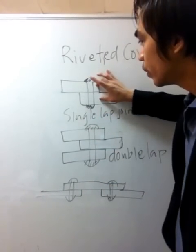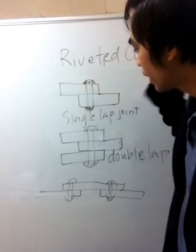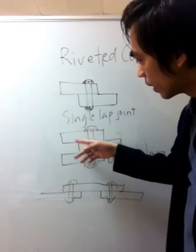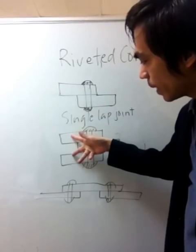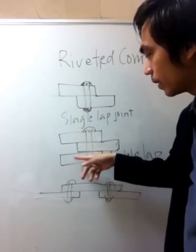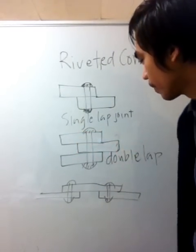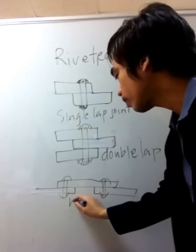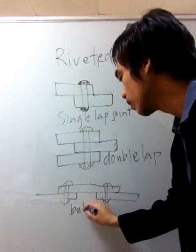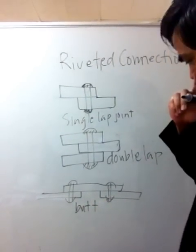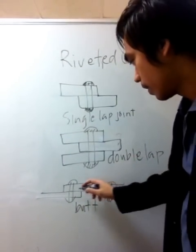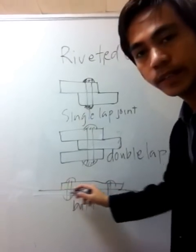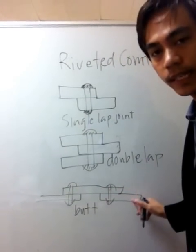The single-lap joint has two plate materials connected by rivets. We have the double-lap joint with two cover plates — top and bottom — and the main plate. And then we have the butt joint, where the top material is connected to another two bottom materials.